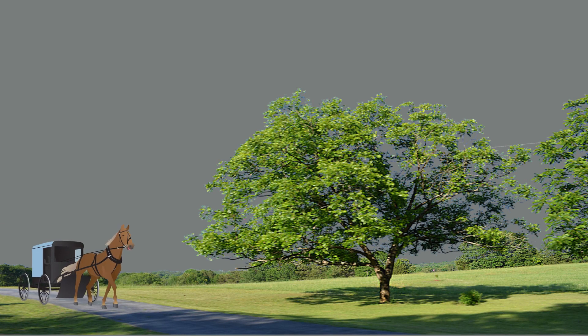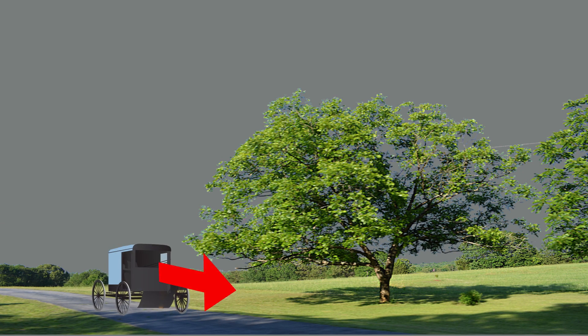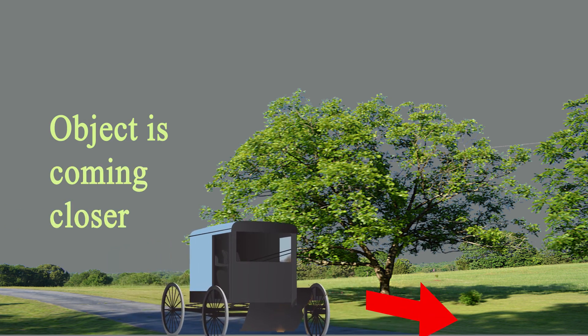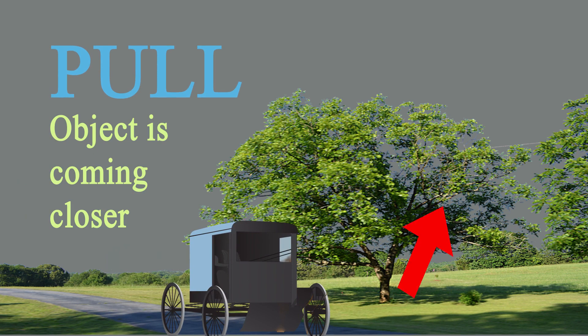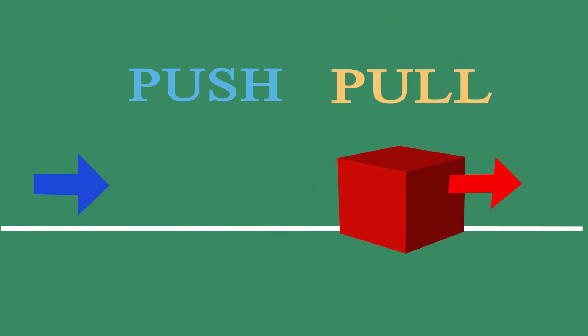Look at this — the carriage is coming closer. How is it coming closer? Because the horse is bringing it closer. If we remove the horse for understanding, we will see the object is coming closer. Why is it coming closer? It is nothing but pull. So here there is push, and here there is pull.